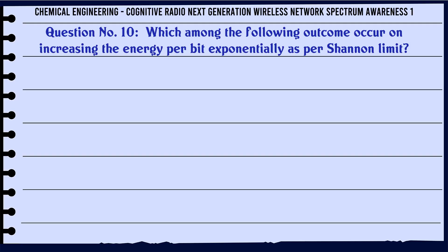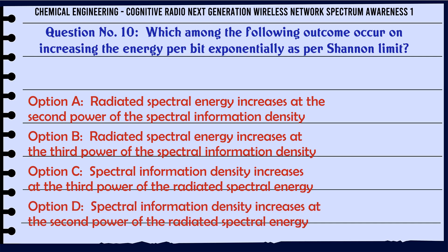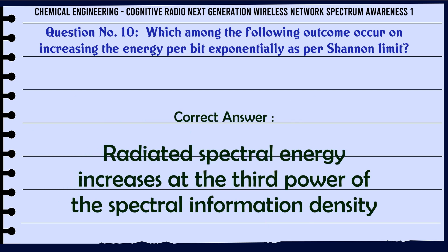Which among the following outcome occurs on increasing the energy per bit exponentially as per Shannon limit? A. Radiated spectral energy increases at the second power of the spectral information density. B. Radiated spectral energy increases at the third power of the spectral information density. C. Spectral information density increases at the third power of the radiated spectral energy. D. Spectral information density increases at the second power of the radiated spectral energy. The correct answer is: Radiated spectral energy increases at the third power of the spectral information density.